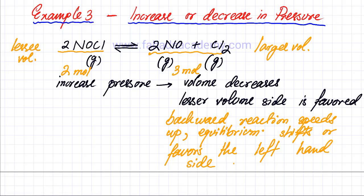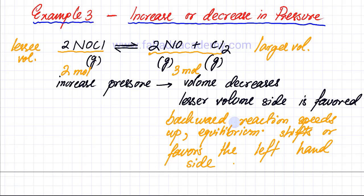Vice versa, if I decrease pressure, that means I am increasing volume, so the more volume side would be favoured. The forward reaction would speed up and the equilibrium would favour the right hand side, producing more NO and Cl₂.